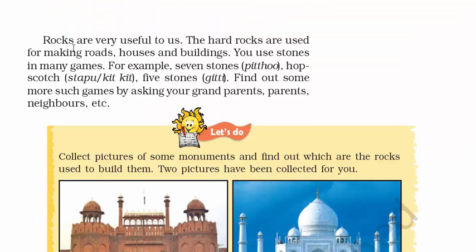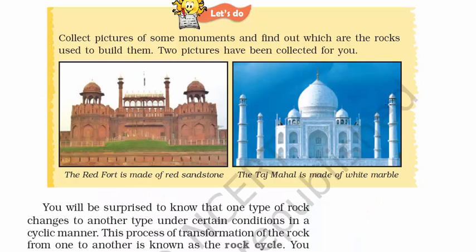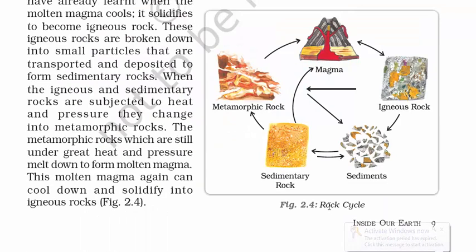Rocks are very useful to us. Hard rocks are used for making roads, houses, and buildings — have a look at this picture showing the best usage of rocks in history. There is also a term called rock cycle, which refers to the changes that a rock goes through from time to time. You can see how sedimentary rock turns into metamorphic, and then igneous rock turns into sediment — a whole cycle. So igneous, sedimentary, and metamorphic rocks combined together make up the rock cycle.